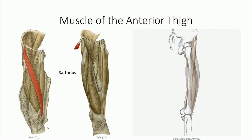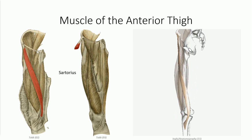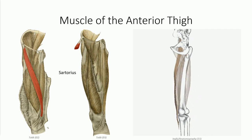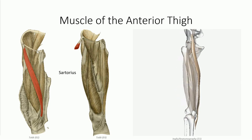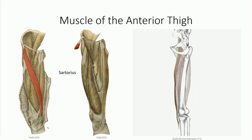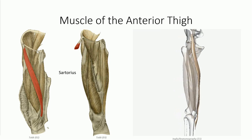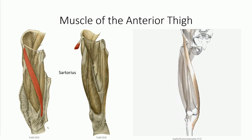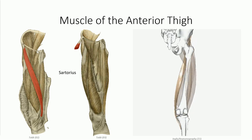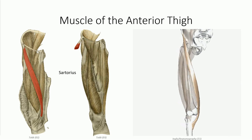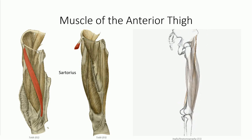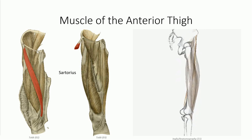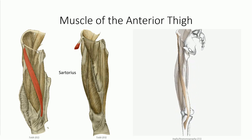The last muscle of the anterior compartment is the sartorius, which has the distinction of being the longest continuous muscle in the body. Its fibers originate off the ASIS and spiral medial and inferior to cross posterior to the knee. From there, the fibers change direction to come anteriorly to insert on the medial aspect of the knee. Sartorius is a Latin term meaning tailor. The tailor muscle gets its name because medieval tailors would work while sitting in a cross-legged position, and the sartorius plays a role in each of these motions: flexion at both the hip and knee, and external rotation at the hip.